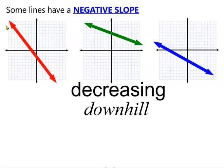So the opposite of that would be your lines going downward from left to right or decreasing, and we call those a negative slope.